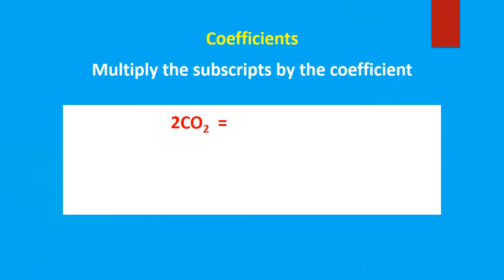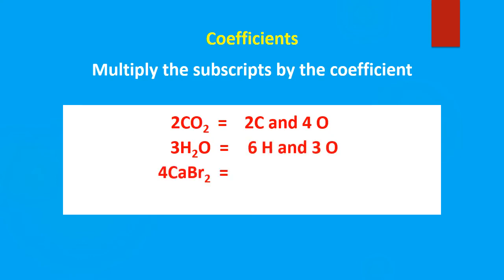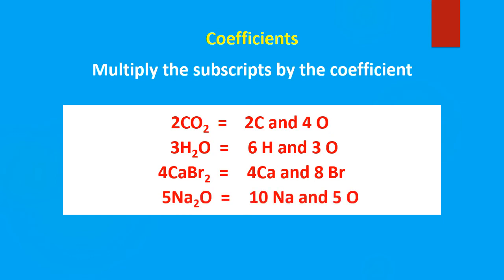So when we have coefficients, the coefficients multiply throughout the subscripts. That means we take our coefficient and multiply by the subscripts. For carbon, we'll have two times one, so we have two carbons. Four oxygens. With three H₂Os, we'll have six hydrogens, three oxygens. For the next one, we have four calcium, eight bromides, ten sodium, and five oxides. Remember, the coefficient multiplies throughout the subscripts.